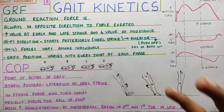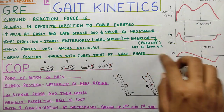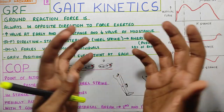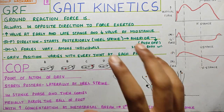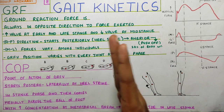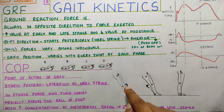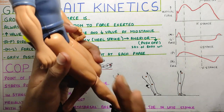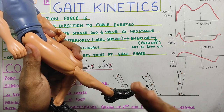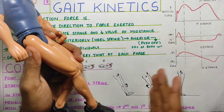Ground reaction force vector is very important when we talk about gait kinetics. In future videos, we will discuss how ground reaction force and your muscle activity work together to propel you forward. Based on the position of your ground reaction force vector, the moment at the joint will change. If it's posterior, it will cause flexion at the knee joint; anterior will cause extension. At the ankle, if it's anterior it will cause dorsiflexion; if it's posterior it will cause plantar flexion.